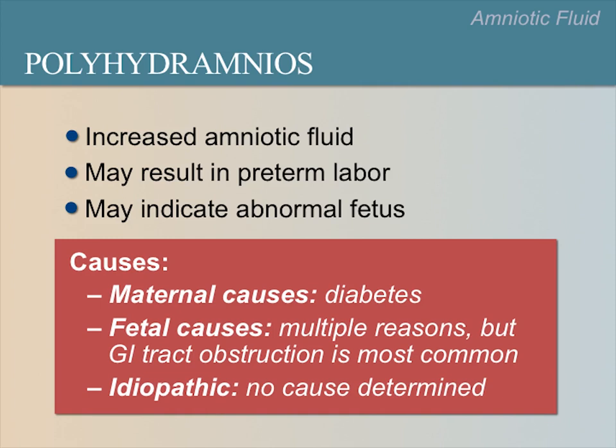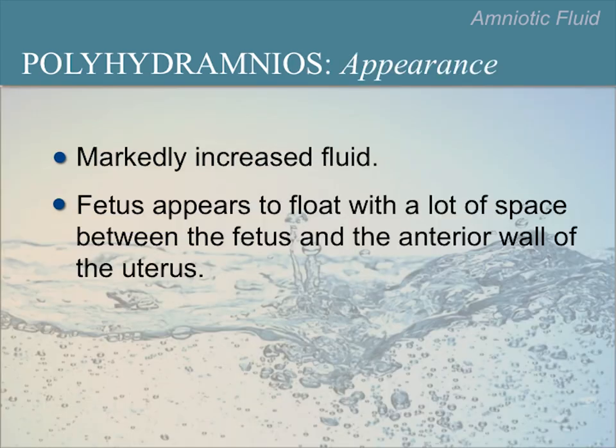With polyhydramnios, you will easily see the excess fluid on ultrasound. The fetus will appear to float with a lot of space between the fetus, uterine wall, or placenta. This is a sagittal view of a fetus with polyhydramnios. Notice the large amount of amniotic fluid between the fetus and the anterior wall of the uterus.